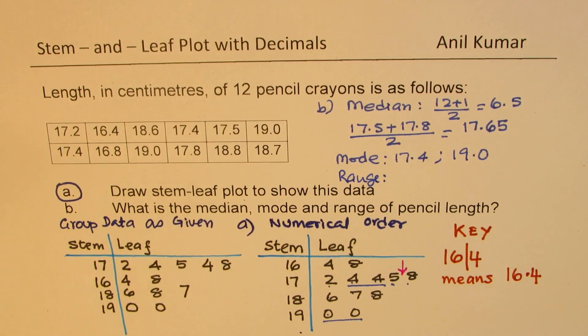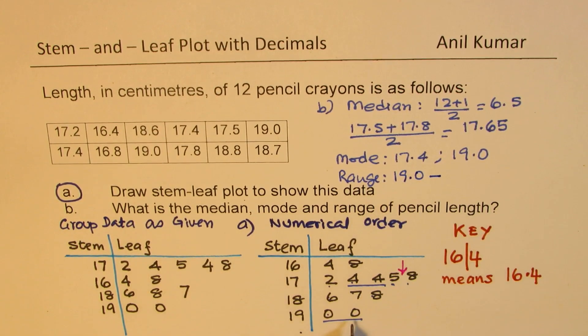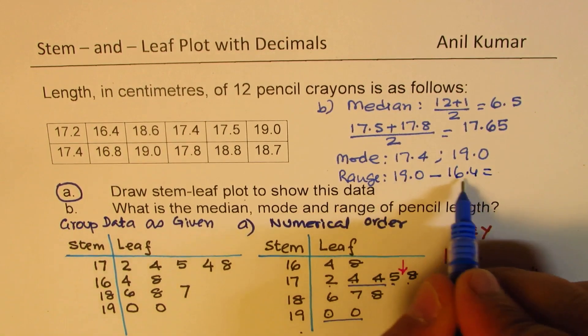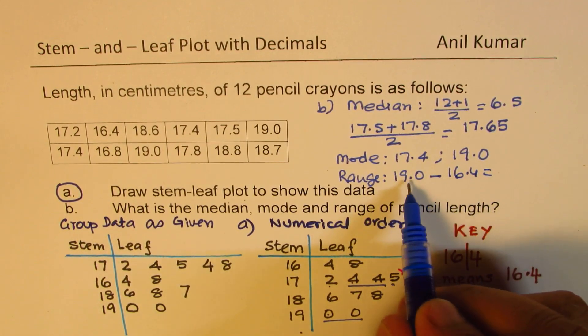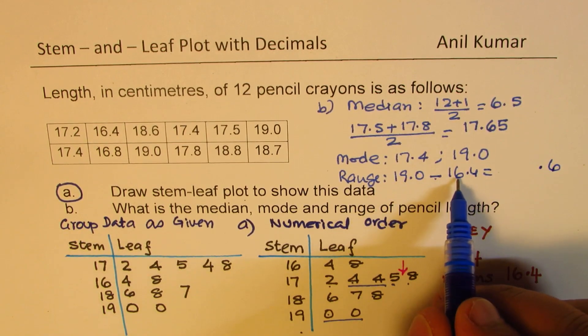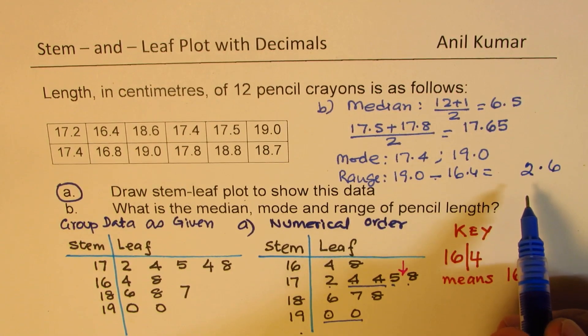Range is the largest value minus smallest. So in this case it is 19.0 which is the largest value and the smallest value is 16.4. So when you take the difference, borrowing one will give us 10 take away 4 which is 0.6. 8 take away 6 is 2. So the range here is 2.6.